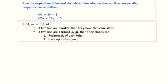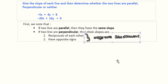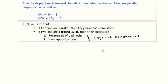And if two lines are perpendicular, then their slopes are reciprocals of each other and they have the opposite sign. And another way to say that, or in a more concise way, is to say that if two lines are perpendicular, then their slopes are negative reciprocals of each other.